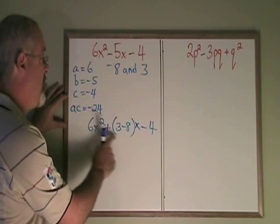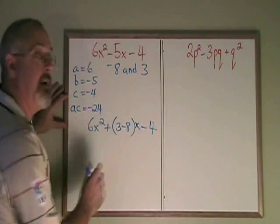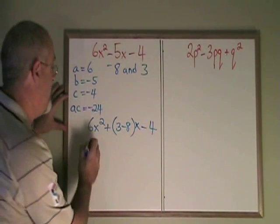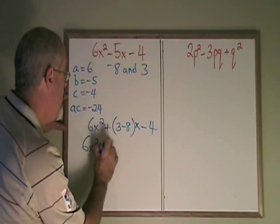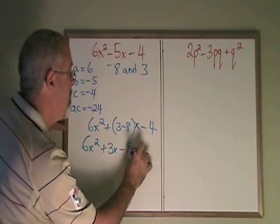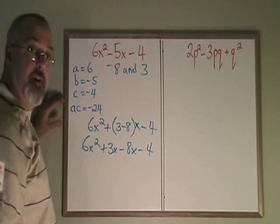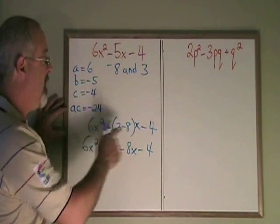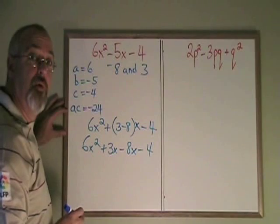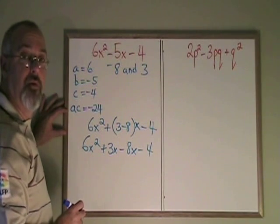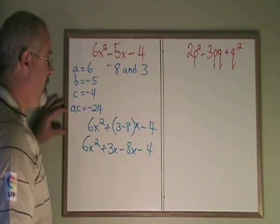The next thing I'll do is I'll break this 3 minus 8x into two separate terms. I get 6x squared plus 3x minus 8x minus 4. And what I have done is I have converted my complex trinomial into a four term grouping. If I already know my grouping factoring method, I can finish this off quickly.